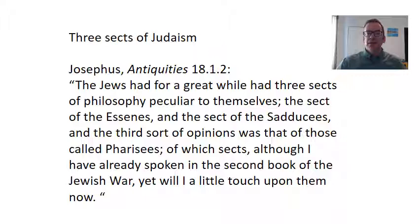In this brief lecture we're going to look at the three sects of Judaism. One reason this is important is because Christians came out of Judaism — Christianity was really an offshoot of Judaism. So it's important to look at these three groups and figure out which had the most influence. We know quite a bit about two of the sects: the Sadducees and the Pharisees.